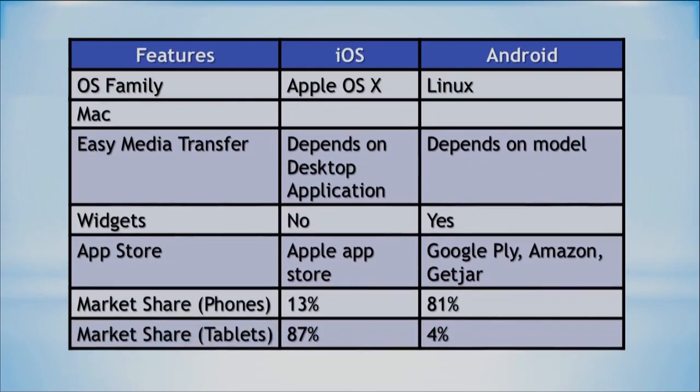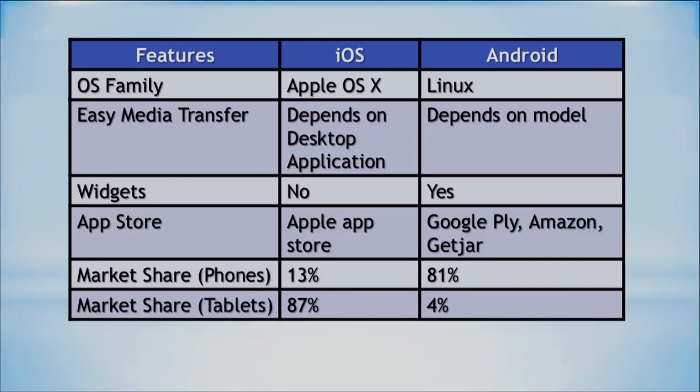Looking at market share, iOS has about 13% of the phone market, while Android has about 81%. That's a very significant market share for phones. But if we look at tablets, the numbers differ: iOS has about 87% of the tablet market share, and Android has about 4%. So between phones and tablets, there is a notable difference.